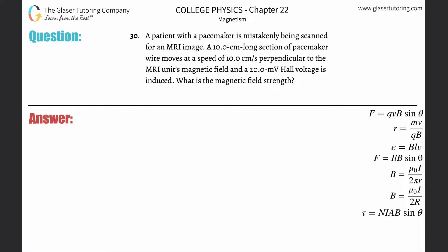Number 30: A patient with a pacemaker is mistakenly being scanned for an MRI image. A 10 centimeter long section of pacemaker wire moves at a speed of 10 centimeters per second perpendicular to the MRI unit's magnetic field, and a 20 millivolt Hall voltage is induced. What is the magnetic field strength?